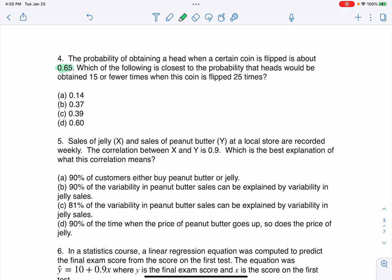It says, which of the following is closest to the probability that heads would be obtained 15 or fewer times when this coin is flipped 25 times? Reading through that, buzzwords that stand out are probability, and I can see from my answers that I'm going to be calculating some sort of probability, some sort of number between zero and one. And the other thing is it says I'm going to flip it 25 times. So I want you to imagine you're flipping this coin 25 times and you're keeping track of the number of times that you flip a head. And then we want to see how likely is it that that happens 15 or fewer times?